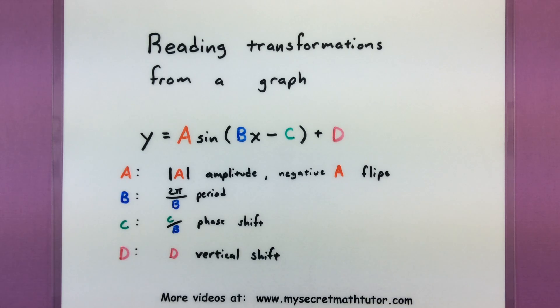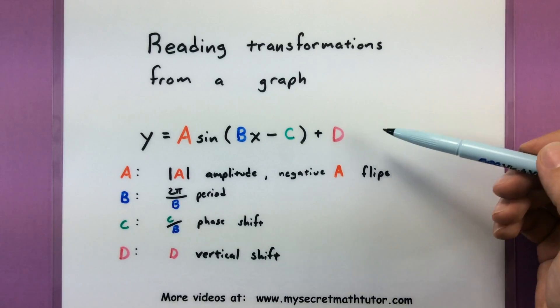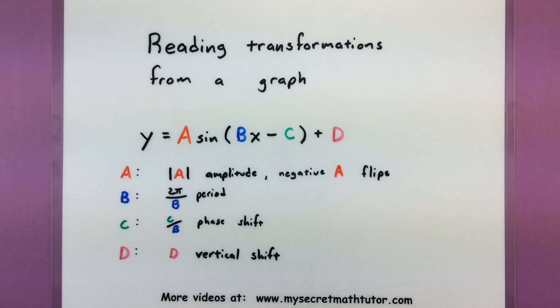Hey YouTube and welcome to MySecretMathTutor! For this video I want to talk about how you can read different transformations when looking at the graph. So the idea is that maybe you have some graph for sine or cosine and you're trying to work backwards and build the equation that was used. The tough part about this is there might have been some transformations in here and we're really trying to figure out what key values should I put in the equation to represent all those transformations.